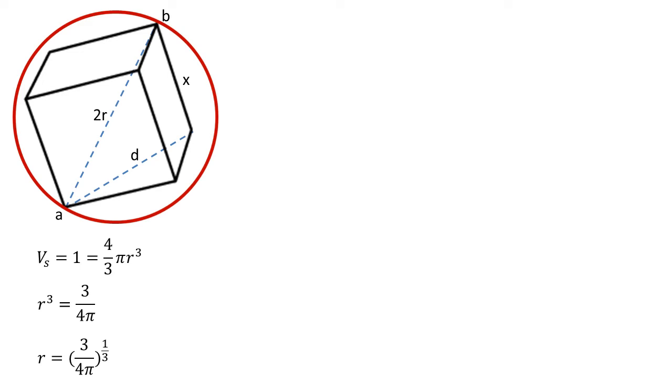Now this makes a right angle triangle with x and 2r, so by Pythagoras's theorem, (2r)² equals d² + x². But the base is also a square with right angles and edges of x, so d² equals x² + x².